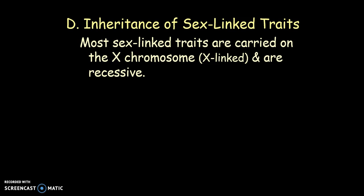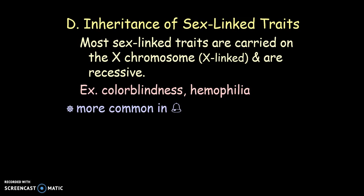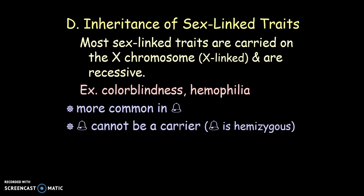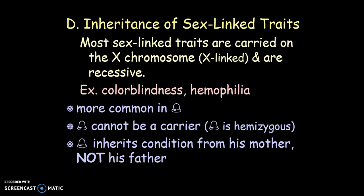Now we're going to talk about sex-linked traits. These are traits located on the X chromosome — the 23rd set of chromosomes, not the autosomal ones. We have two big examples: colorblindness and hemophilia. These are more common in males because they only have one X chromosome. Colorblindness is the inability to distinguish between different colors, and there are different types. Hemophilia is a blood disorder where they lack a clotting factor essential for blood to clot, so they bleed too much.